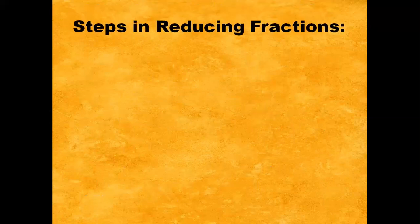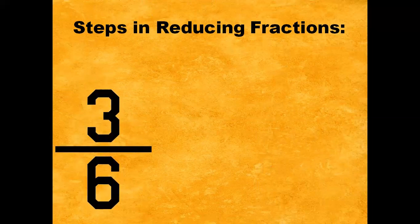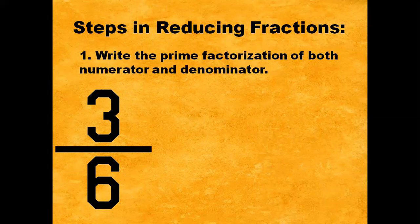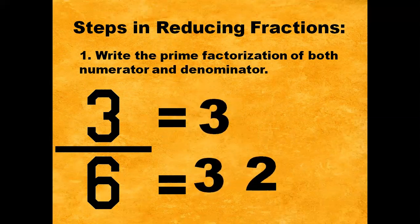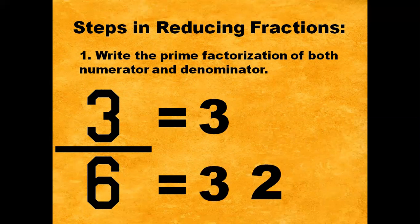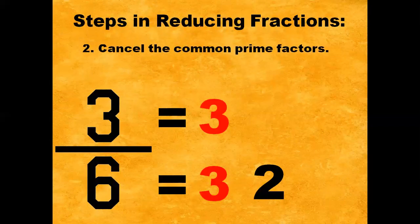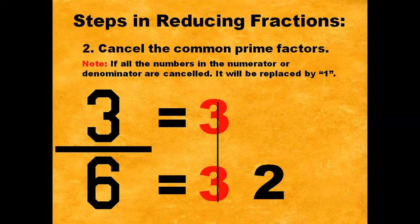For example, we have 3/6. Step number 1: Write the prime factorization of both numerator and denominator. The prime factors of 3 is 3, and the prime factors of 6 is 3 times 2. Step number 2: Cancel the common prime factors. In this case, the common prime factor of 3/6 is 3 — in short, the greatest common factor of 3/6 is 3. Note: if all the numbers in the numerator or denominator are cancelled, it will be replaced by 1.